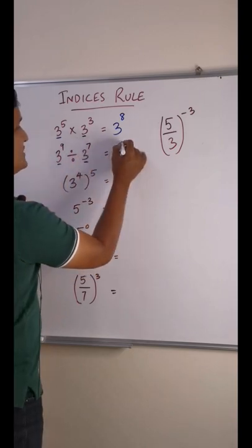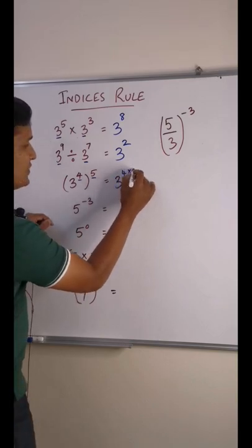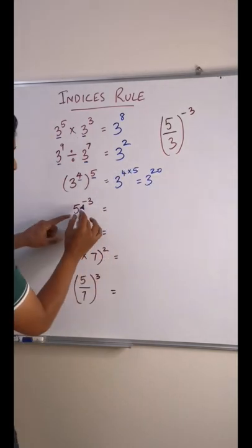So 9 minus 7 is 2. If there are 2 base, you multiply, so it will be 20.